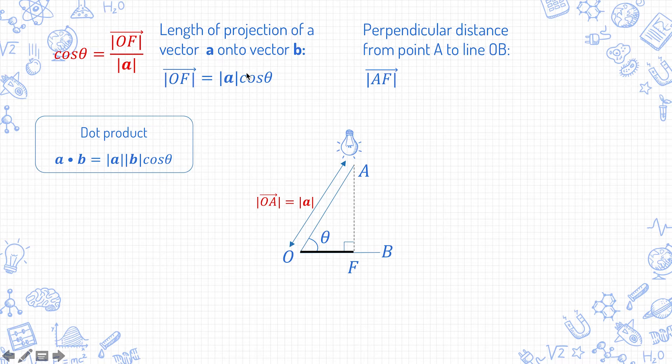Now compare this to the definition of the dot product. This is almost like the dot product except that the mod b is missing. You can put it in by multiplying by mod b over mod b. And then this expression becomes mod of a dot b over mod b. We put a modular sign in the numerator because you're finding a length so you want a positive value. So that means the length of projection of a vector a onto a vector b is mod of a dot b over mod b.